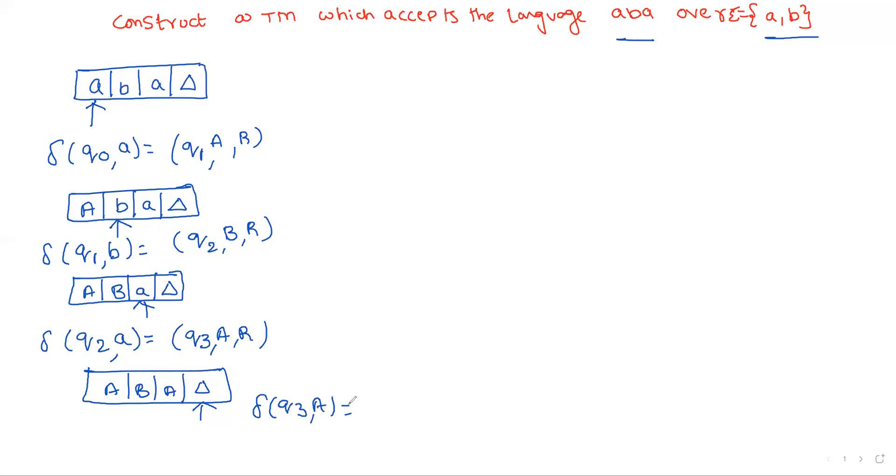Now I am at state q3. Q3 comma blank: on state q3 if you are receiving the blank symbol, that blank is replaced with blank and then stay. S means stay, not left direction, not right direction. L is left direction, R is right direction, S is stay. We will move to state q4 which is a halt state and that is accepted by the Turing machine.